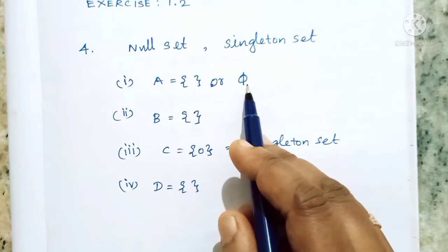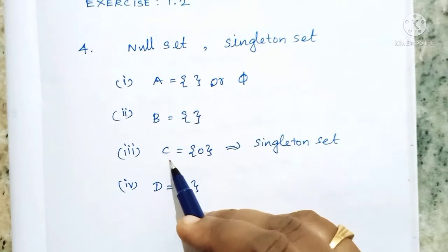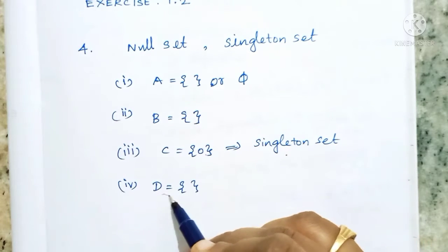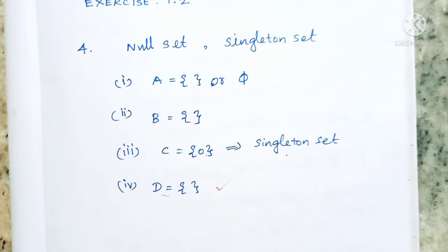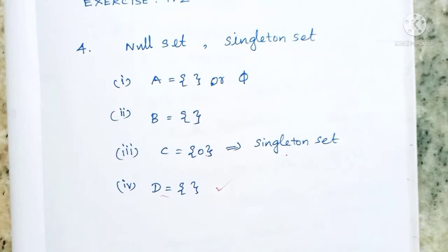So the answers: A is null set, B is null set, C is singleton set, D is again null set. If you have doubts, please comment in the comment section. If you like this video, subscribe. Thanks for watching!